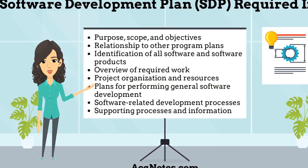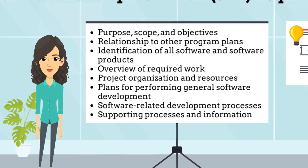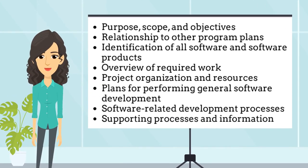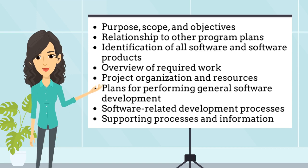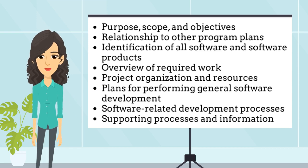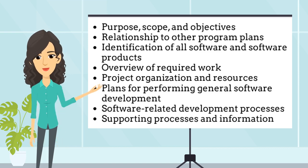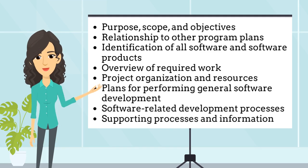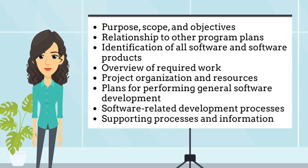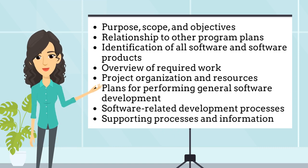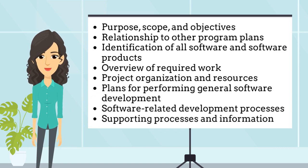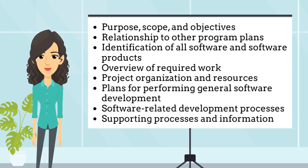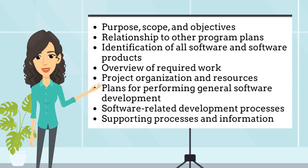What main content goes into the software development plan? The main content includes: purpose, scope, and objectives; relationship to other program plans; identification of all software and software products; overview of required work; project organization and resources; plans for performing general software development; software-related development processes; and supporting processes and information. Visit the webpage for a more comprehensive list of SDP content.